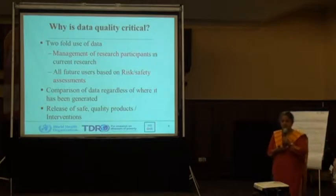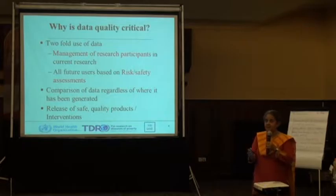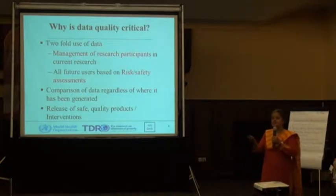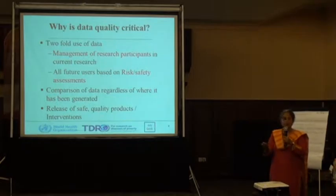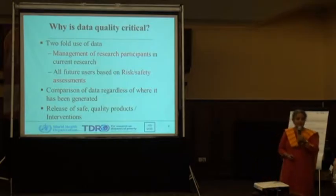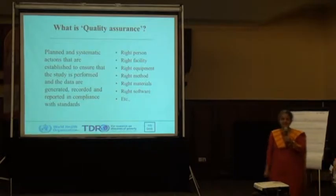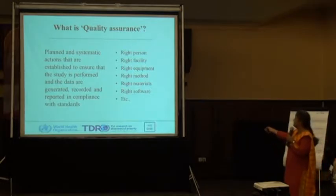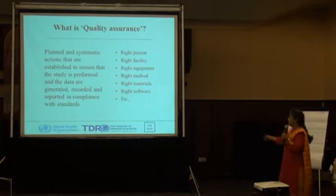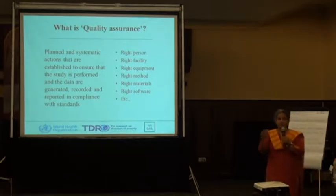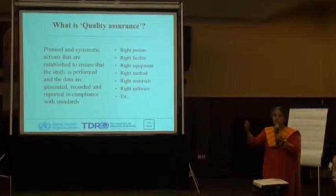Remember we said if there is anything adverse happening, it is tilting the risk-benefit ratio. So if your data is not good, your risk-benefit assessment is not good, which means you are putting all your current participants at risk, and your generalization is putting all the future participants also to further risk. And therefore you need to ensure that there is data quality. Quality assurance is all those planned and systematic actions — choosing the right person, right facility, right equipment, right methods, right material, right software. You train and put all those measures in place to ensure quality.